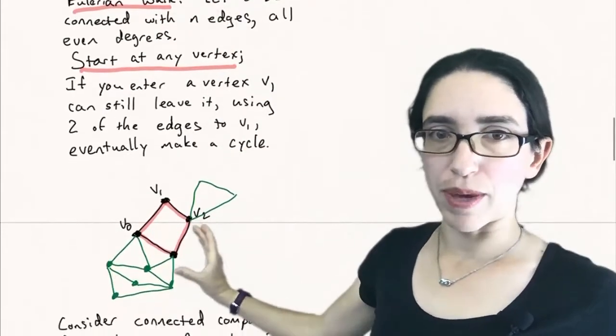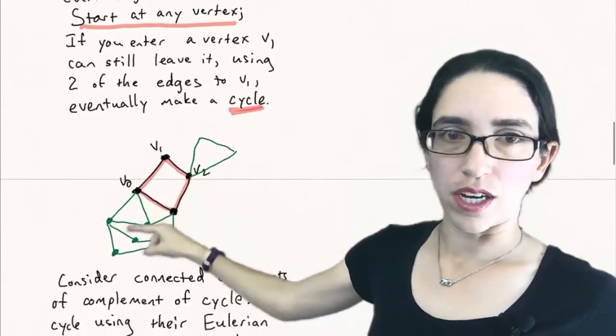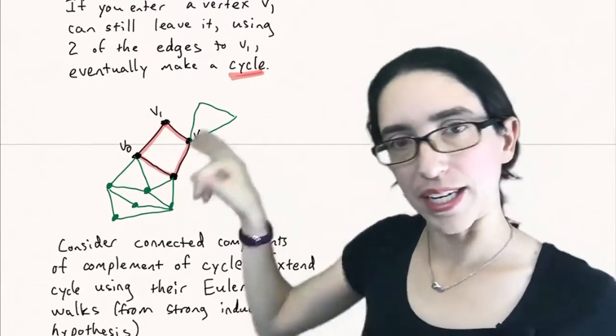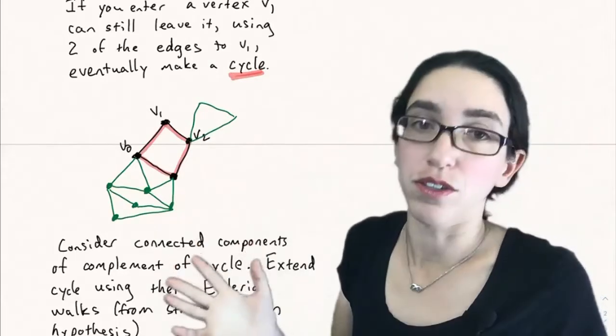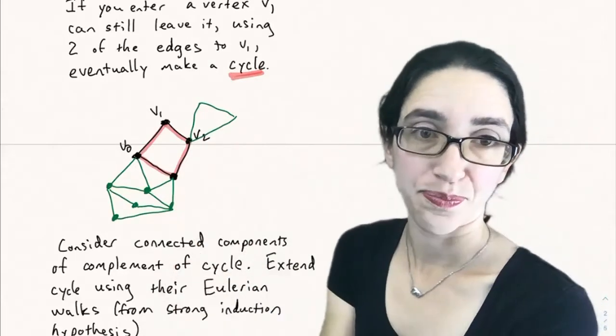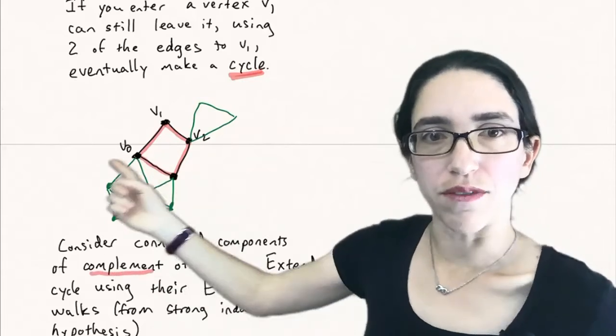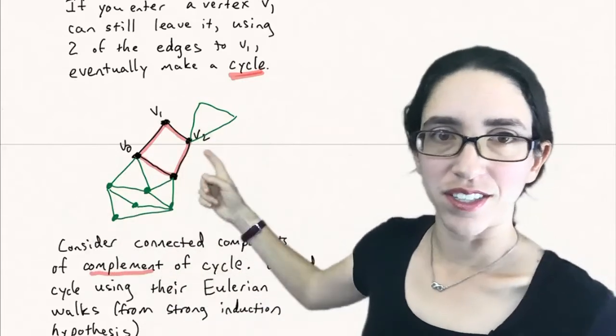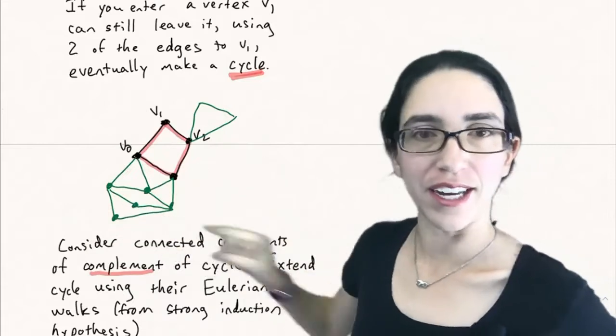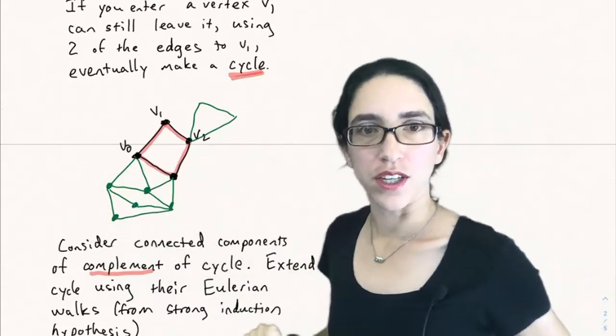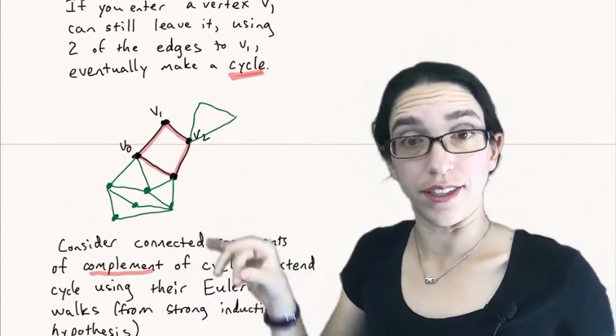So the point is we can eventually make a cycle. So let's look at this red cycle that starts at v0 and comes back to v0 in the graph. All we've proven so far is that there's a cycle, not that there's an Eulerian circuit. Now consider all the connected components of the complement graph of this cycle. You have this cycle sitting inside the big graph and let's color the other edges green. And I mean the complement within the graph G, the edges that aren't in the cycle.